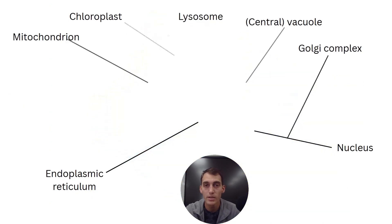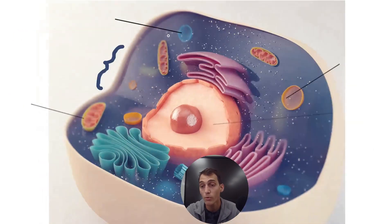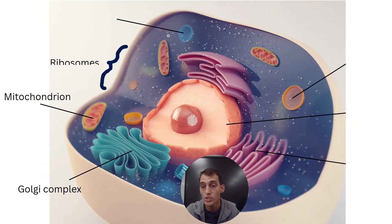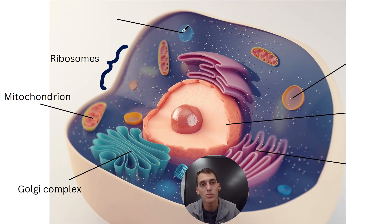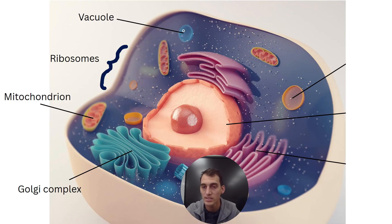This structure responsible for storage of water and other materials, not as large as the one in the plant cell, is a vacuole. The yellow structure containing a whole bunch of enzymes to break stuff down is a lysosome.